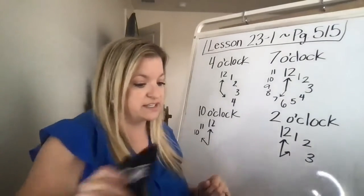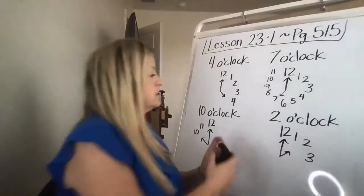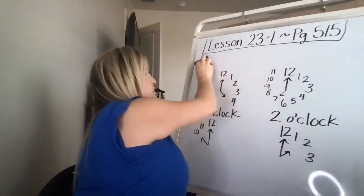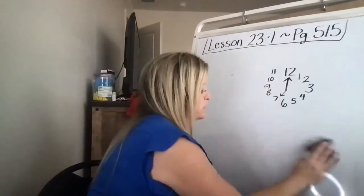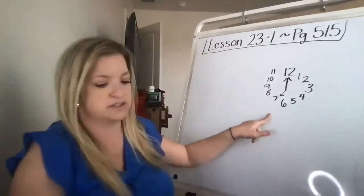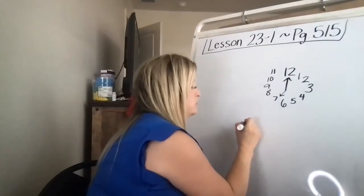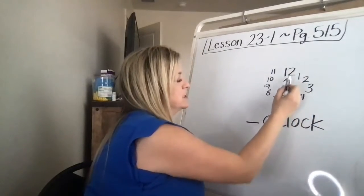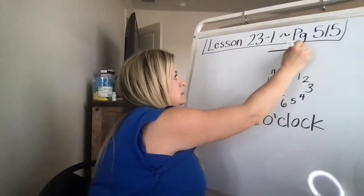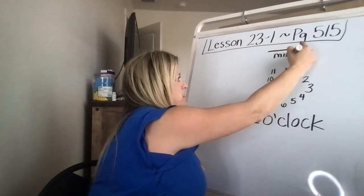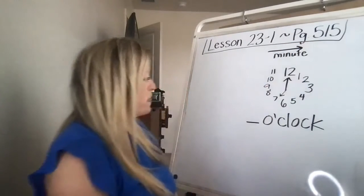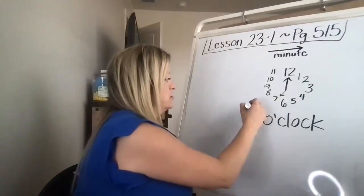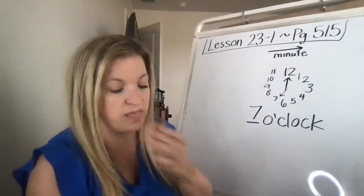Now on page 516, it gives you a time. I'll just erase all of these, but one. It gives you this time. And it says, what time is it? And you're going to write in blank o'clock. You know it's o'clock because the long hand is the minute and it's pointing to the 12. And then you're going to look at the short hand and see where is that pointing? Well, it's pointing to the seven. So it is seven o'clock.